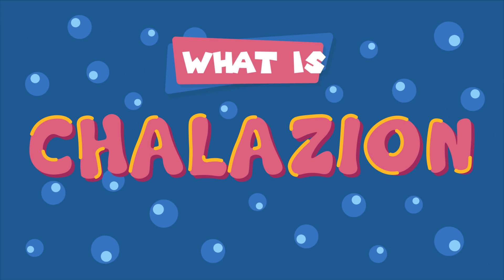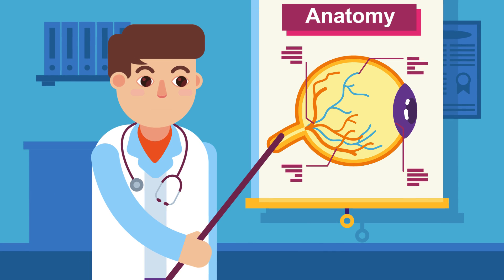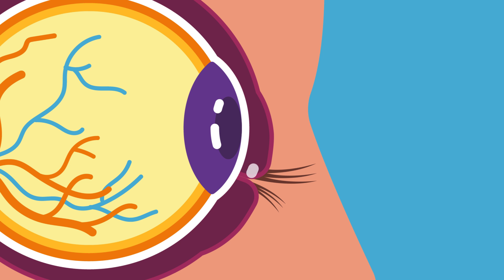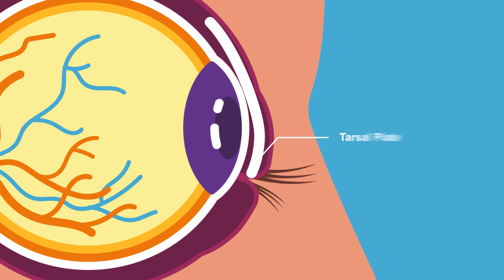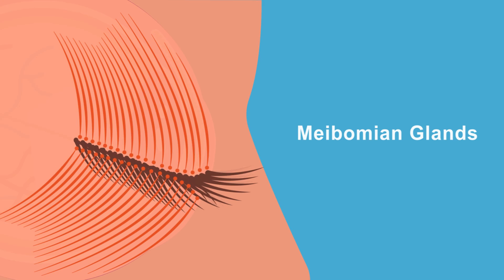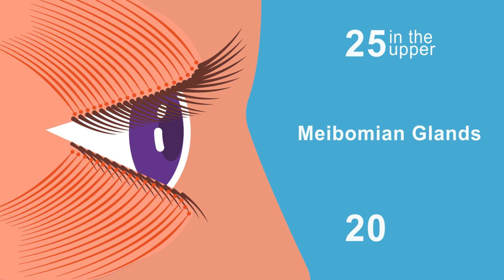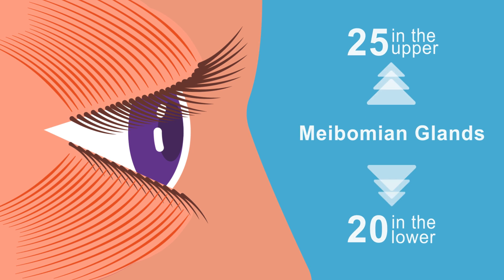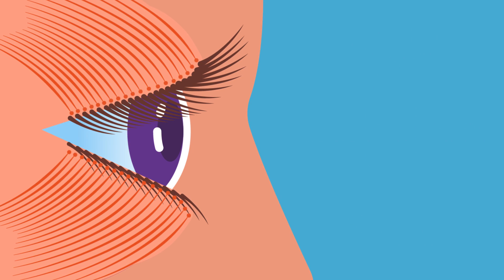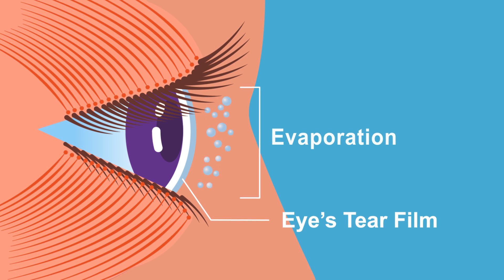What is Chalazion? Before we answer that question, we should talk a little bit about anatomy. Structural support to our eyelids is provided by dense plates of connective tissues called tarsal plates. Each tarsal plate has vertically placed oil-producing sebaceous glands called meibomian glands in them — 25 in the upper and 20 in the lower tarsal plate. Meibomian glands secrete meibum, an oily substance that prevents evaporation of the eye's tear film.